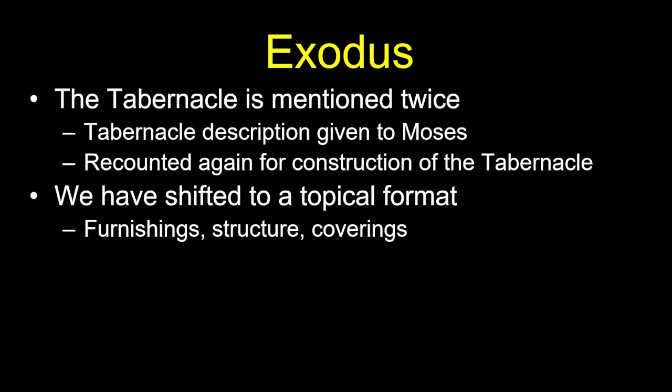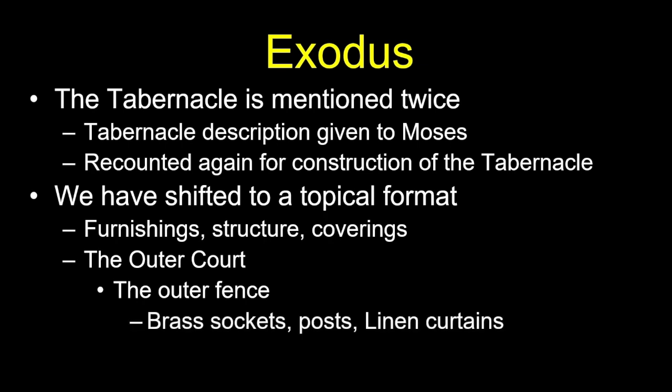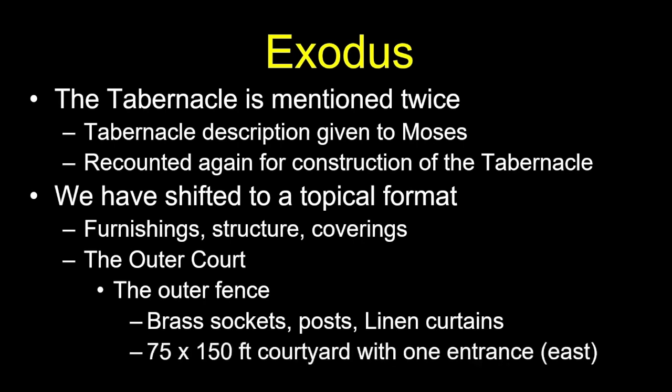Next up is the outer court. The tabernacle's exterior first presents what we'd describe as a canvas fence — brass sockets, posts, and linen curtains surrounding a roughly 75-foot by 150-foot courtyard with one entrance to the east, its long axis running east-west. This fence, slightly higher than eye level, is all that could be seen from the outside.